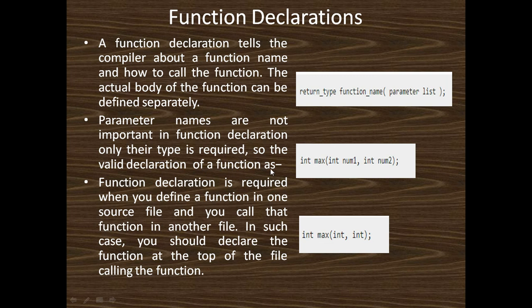So the valid declaration of a function is: int max(int num1, int num2); Here the parameter name is not important; we just define the type of the parameters, that is: int max(int, int); Function declaration is required when you define a function in one source file and call it in another. In such a case, you should declare the function at the top of the file calling the function.